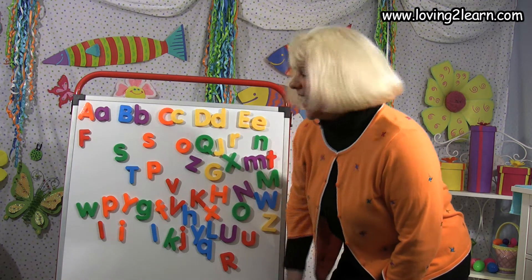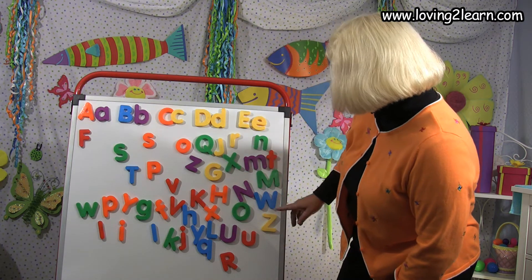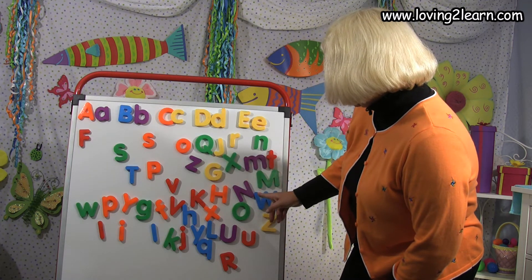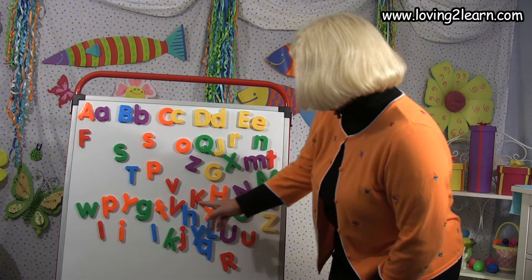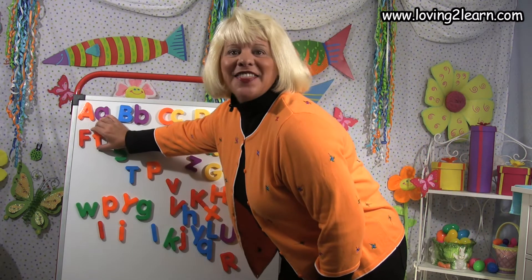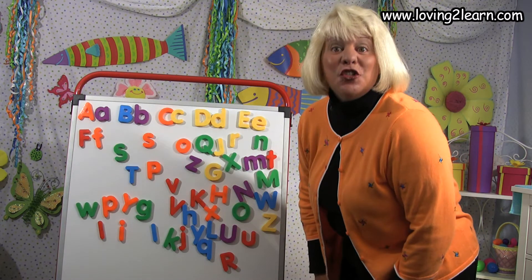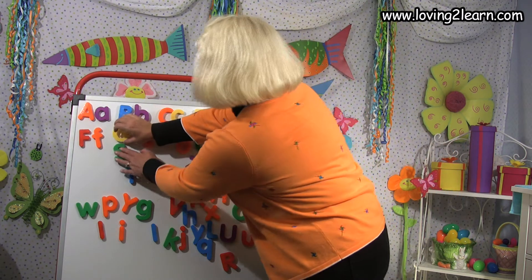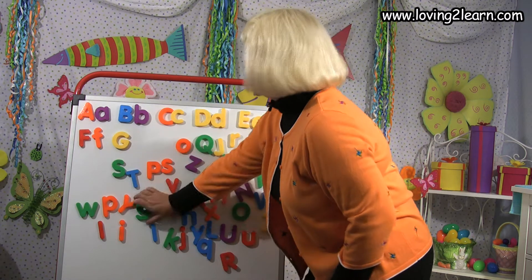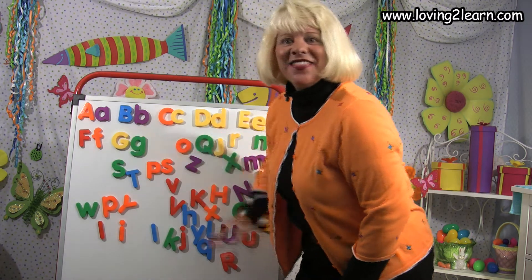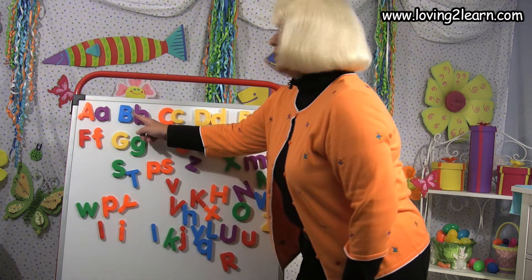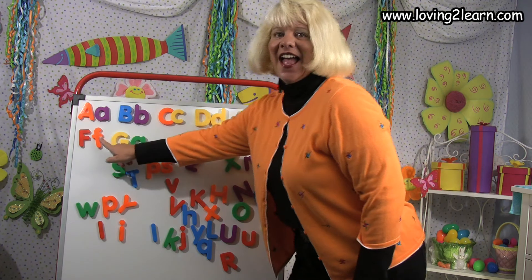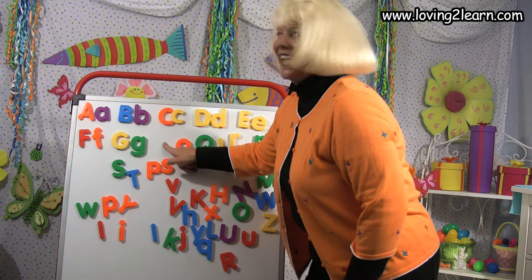Now we have to find the small f. Do we see it? Where's that small f? There it is. There's the small f. G. Let's find the capital G. Here's the capital G and the small g. There we go. A, b, c, d, e, f, g, h.